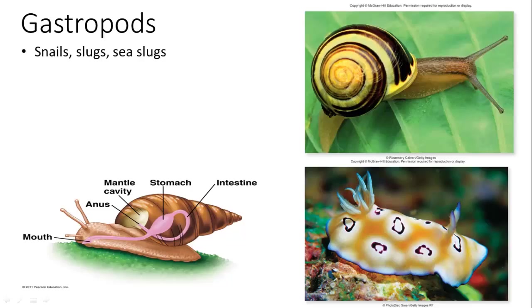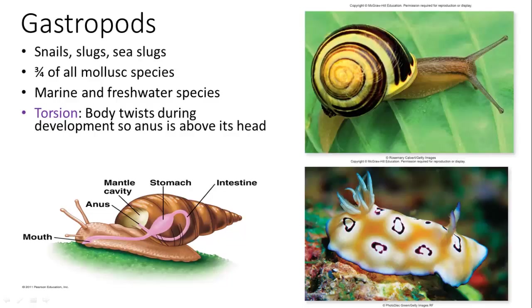Gastropods include snails, slugs, and sea slugs — three-fourths of all mollusk species. Many are marine, freshwater, or intertidal. Their body twists during development so the anus ends up above the head. They can be grazers or predatory, and some are very poisonous — be careful handling ocean species.